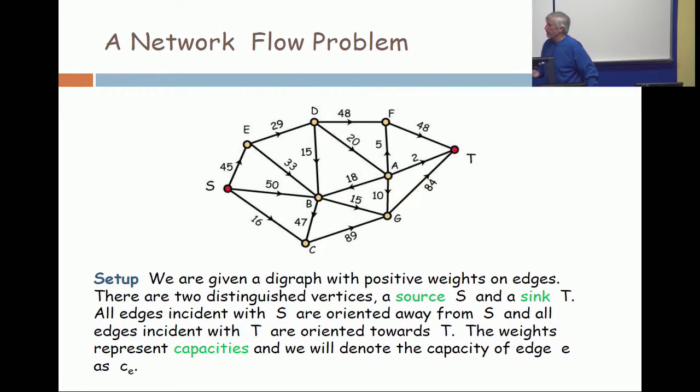The weights represent capacities. So when we put, like on the bottom between S and C, the number 16, that means no more than 16 units of oil can flow on that pipe. It might be a rate. It might be 16,000 barrels a day of oil. But some unit capacity, not all capacity is the same. You might have big pipes in some places and small pipes in other places. It's like the network. Not all internet connections have equal speeds and equal capacities. Big servers, little servers, all kinds of things.